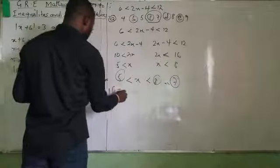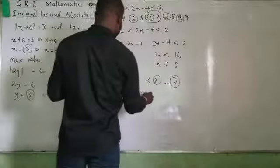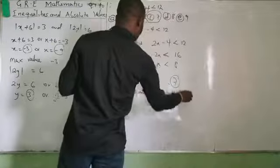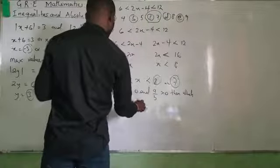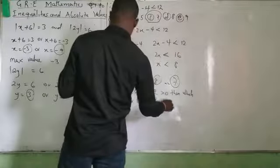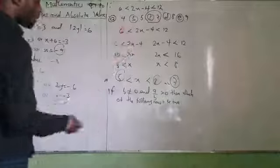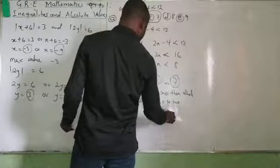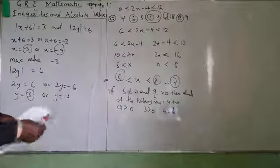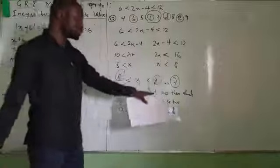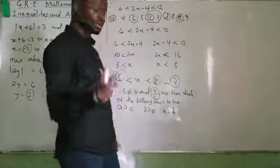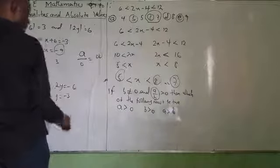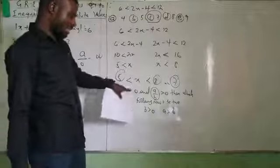The next question: if B is less than A equals 0 and A all over B is greater than 0, which of the following must be true? It means B is not equal to 0. If B equals 0, then A all over B would be undefined. That is why it was clearly stated that B must not equal 0.